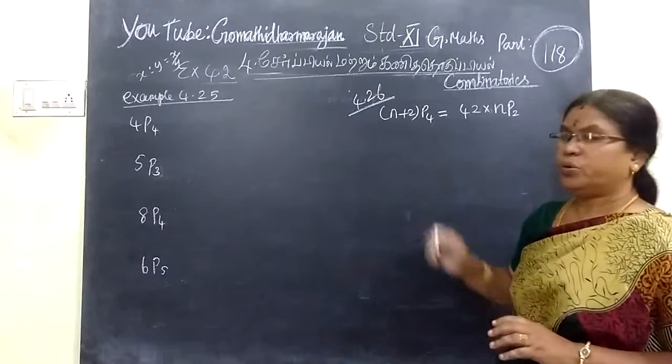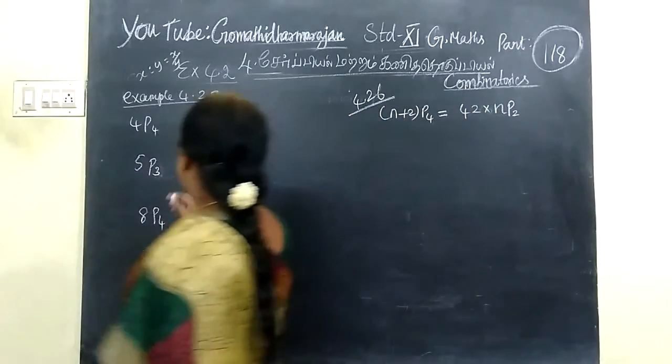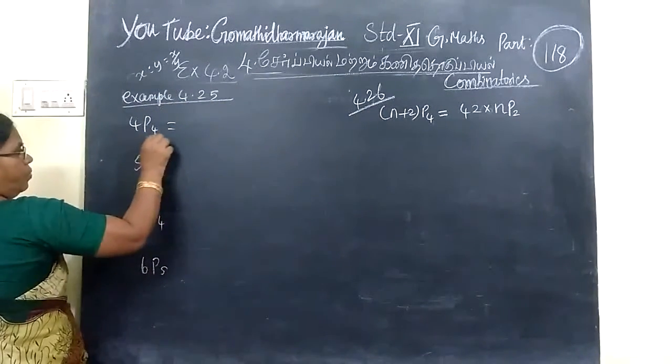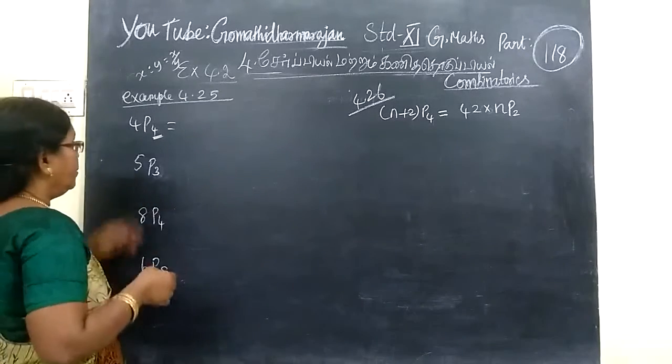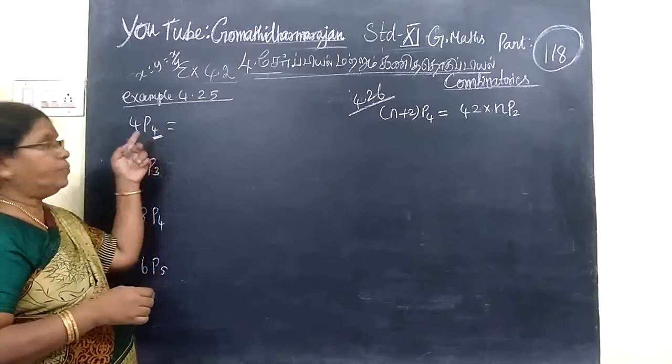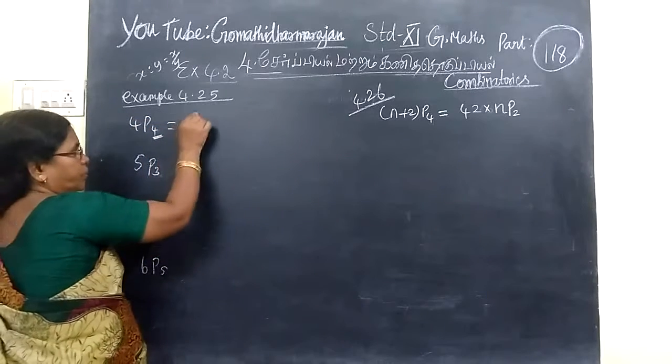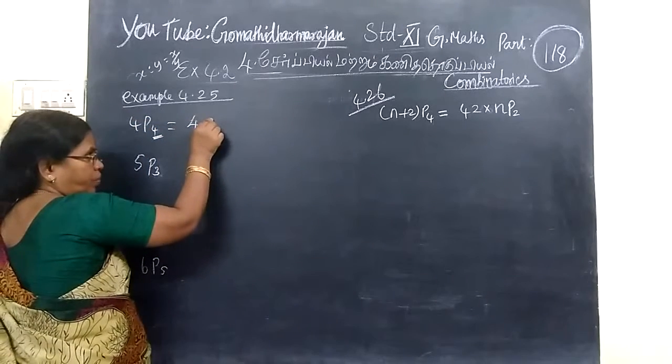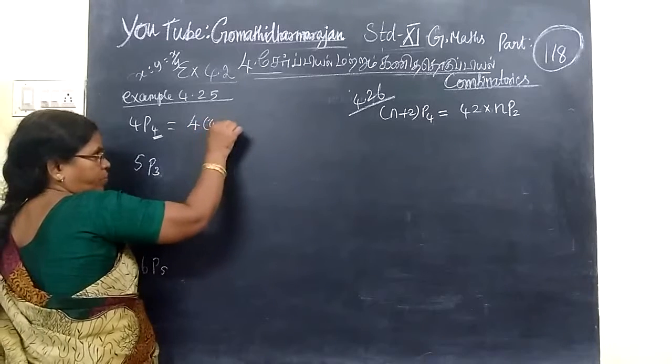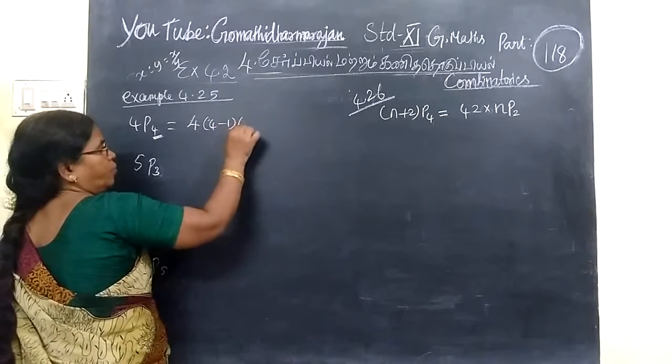4P5 equals 5 factorial over 2 factorial. This is a very simple class, this is a denominator class. 4 factorial over 3 factorial class class, that means 4, 4 into 3 factorial class class. 4 into 4 minus 1.